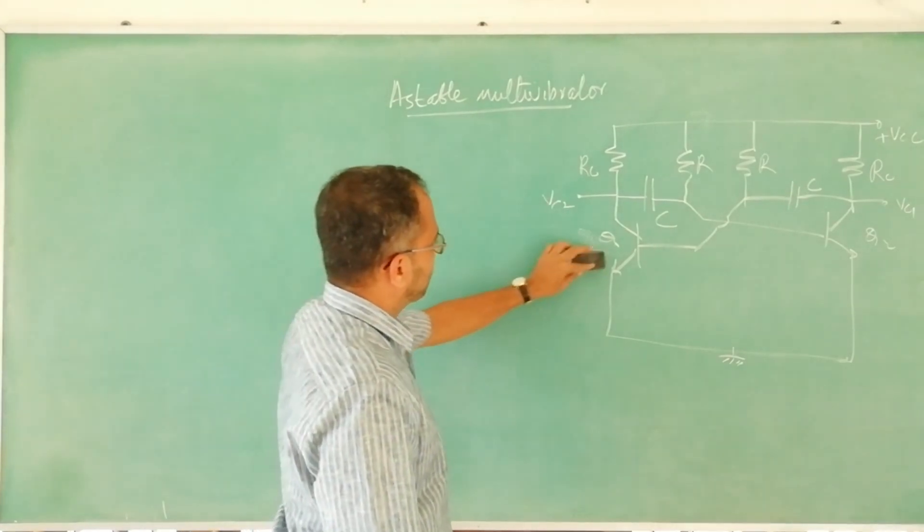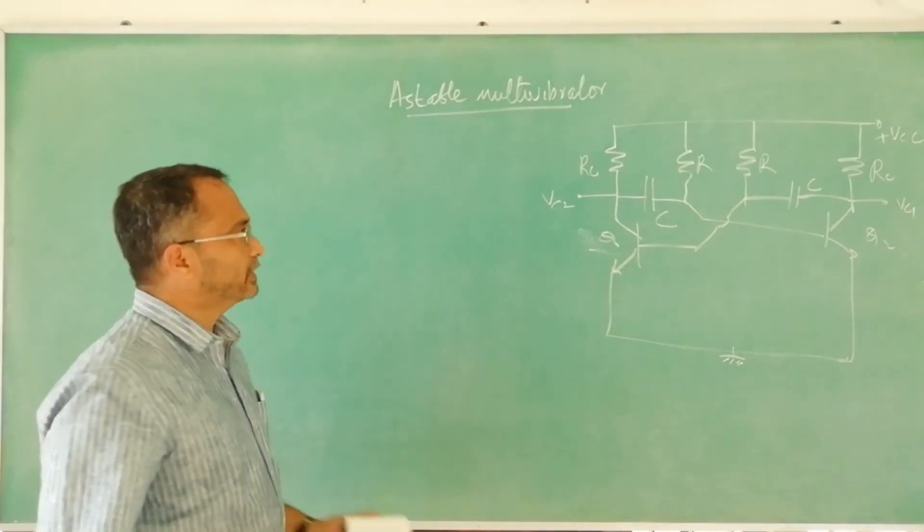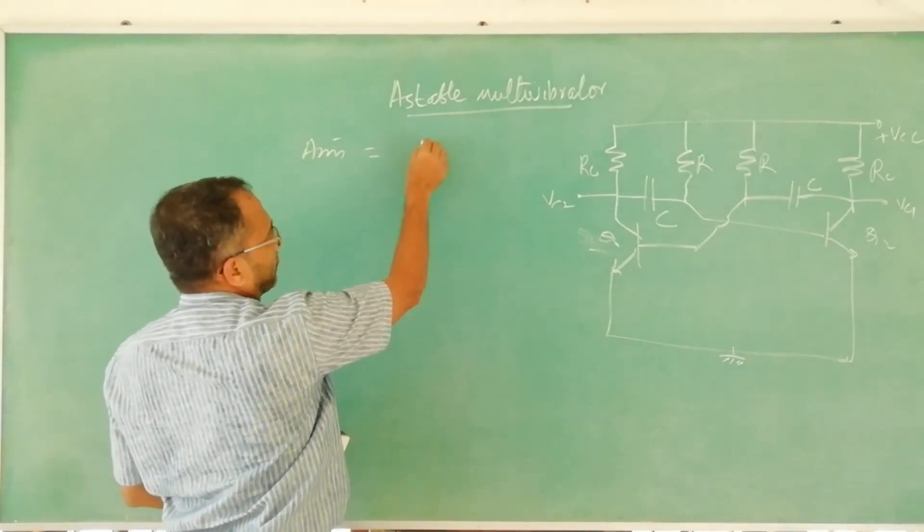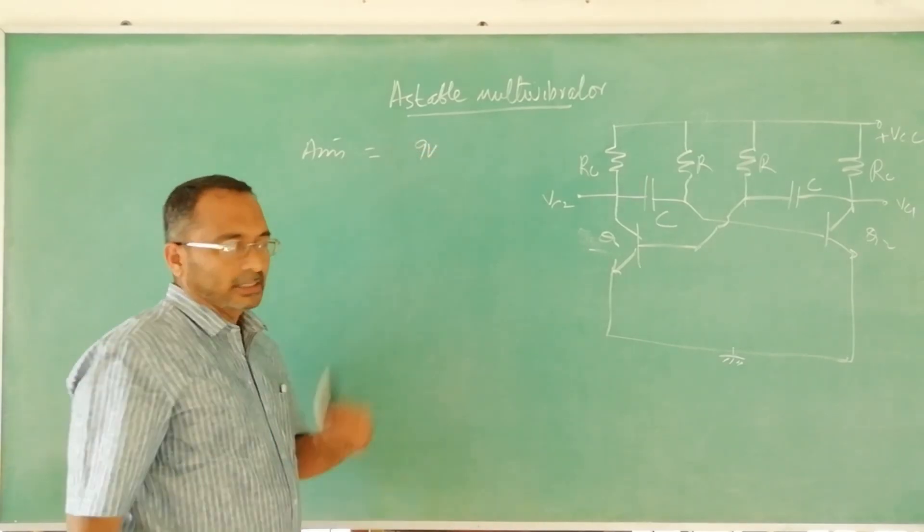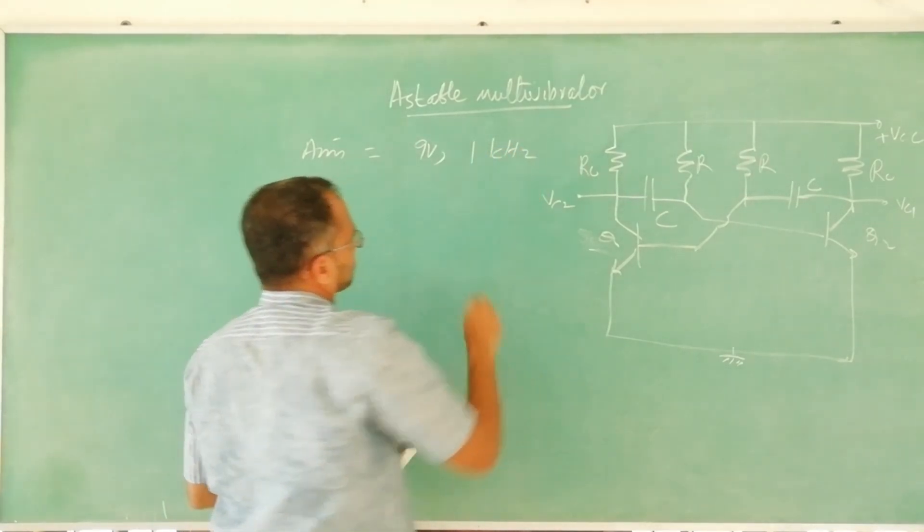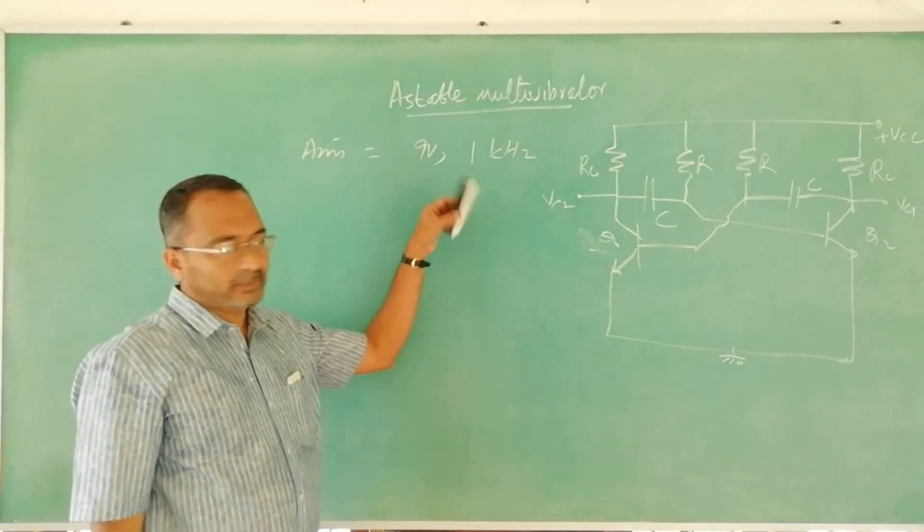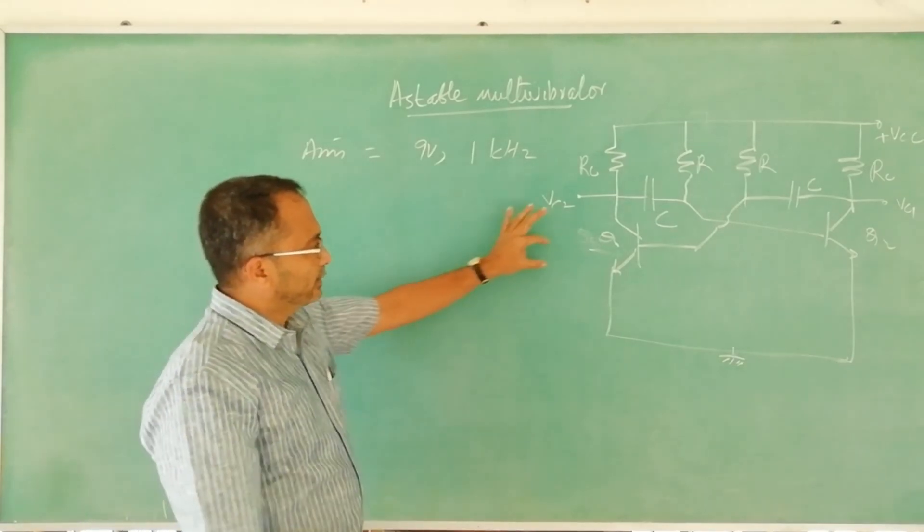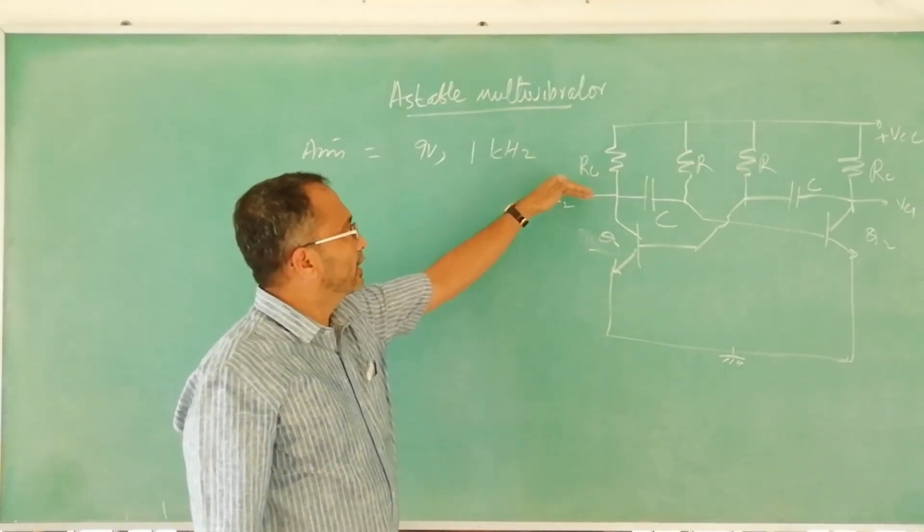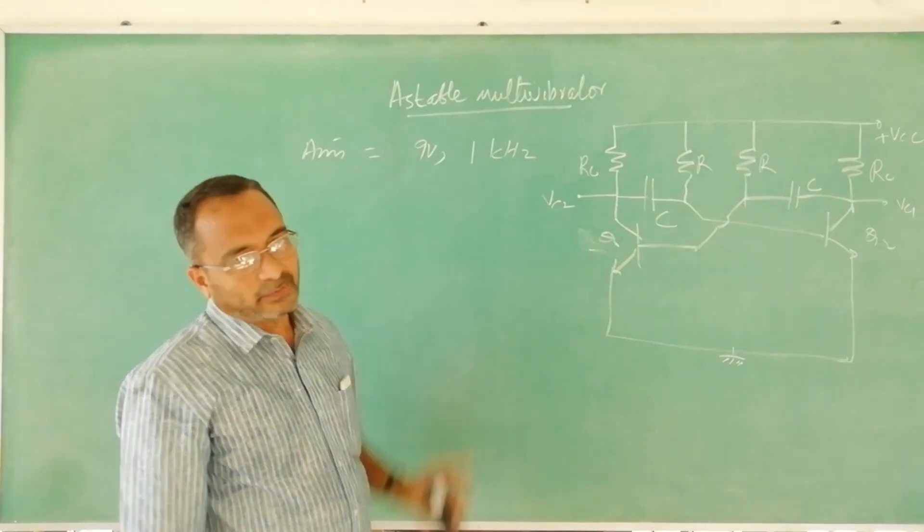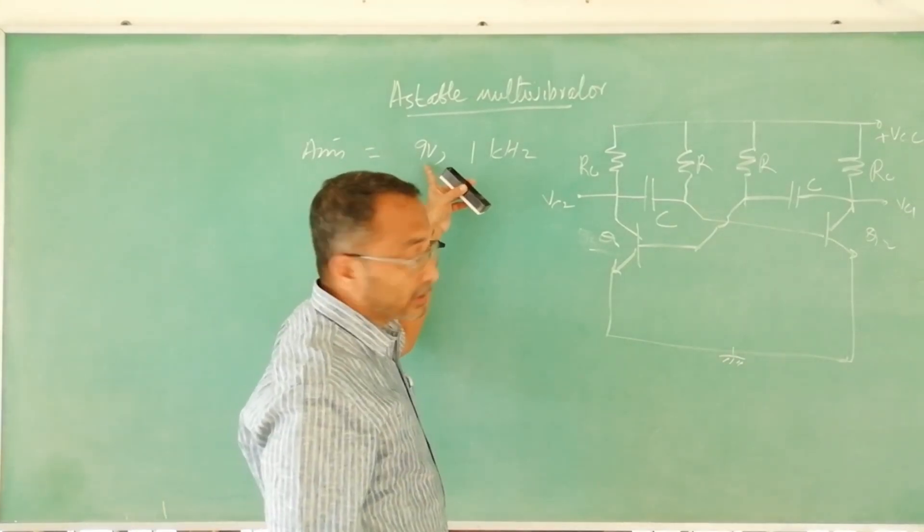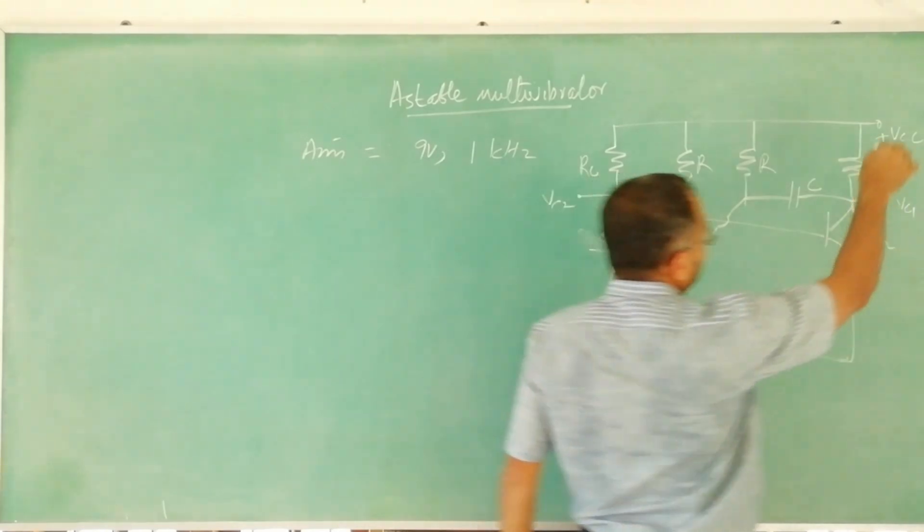First we shall decide the objective. The aim is to obtain an output of nine volt peak and one kilohertz frequency. We will get a square wave, that means positive going square wave varying from 0.3 to nine volt with the frequency one kilohertz. This is the objective. Since the objective is nine volt we keep plus nine volt here.